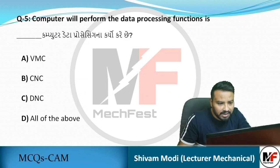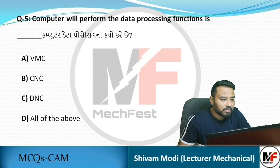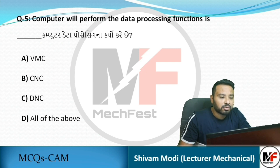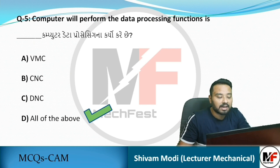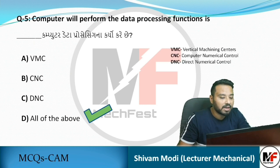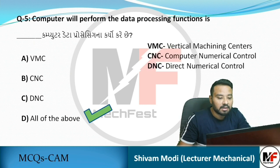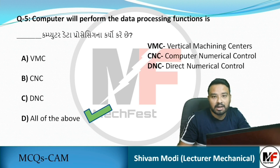Next MCQ: Which of the following will perform the data processing function? The answer is all of the above – VMC (Vertical Milling Center), CNC (Computerized Numerical Control), and DNC (Direct Numerical Control) all perform data processing functions.